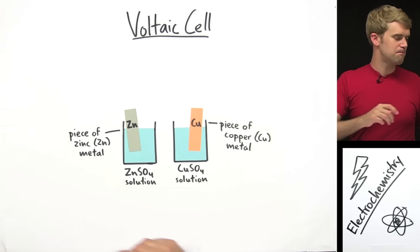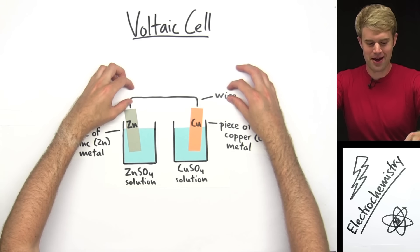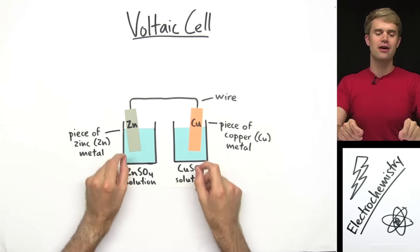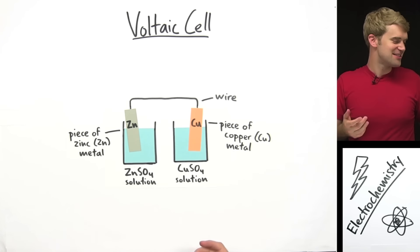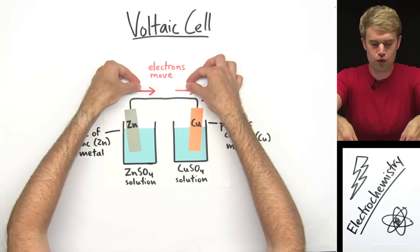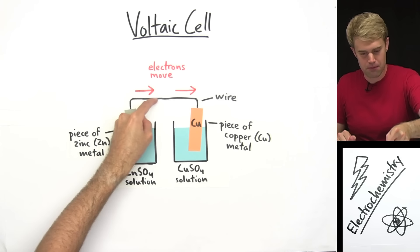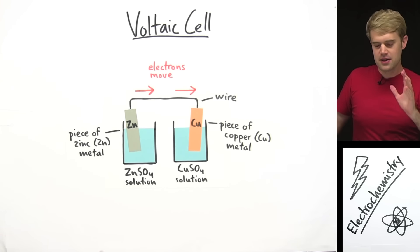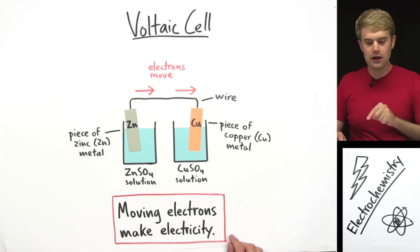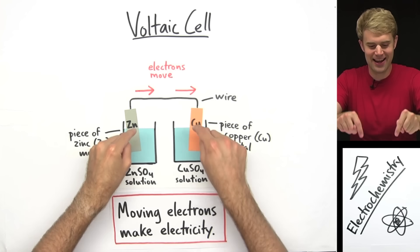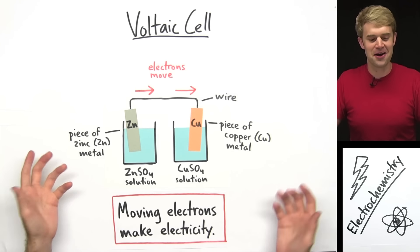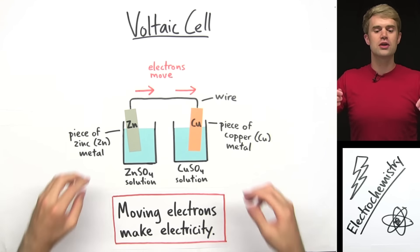Next, we take a metal wire and use it to connect the two pieces of metal together. When we do this, something amazing starts happening — electrons start moving through this wire. They move from the zinc metal into the copper metal. This is a big deal because moving electrons are what make electricity. When we hook up the wire, we have electricity moving through it.